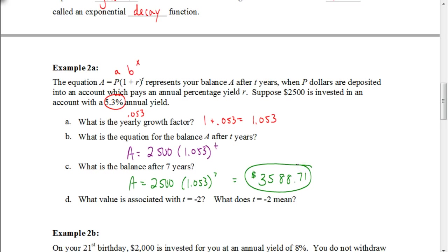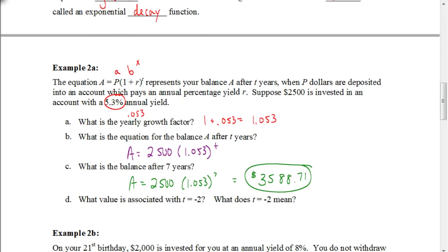If you ended up with something like $3,588,710, it means you did something wrong with your percent. When it says what value is associated with T of negative 2, we put negative 2 in our function: 2,500 times 1.053 to the negative 2nd power. When we do that, we get $2,254.67.